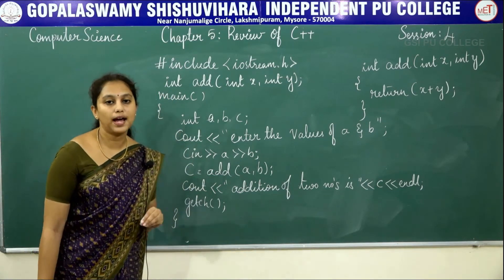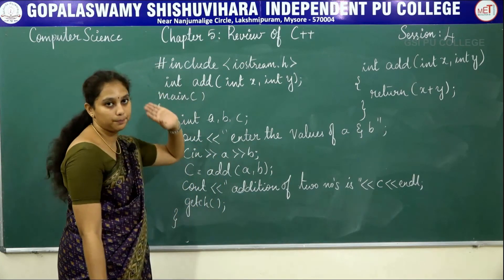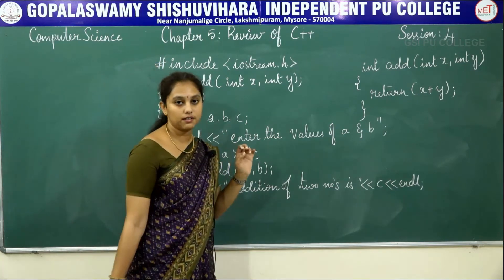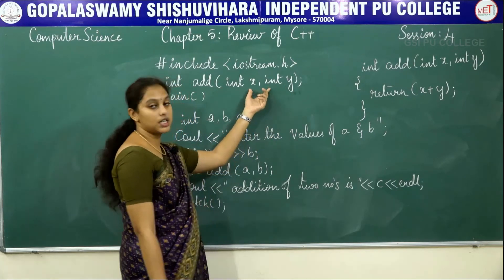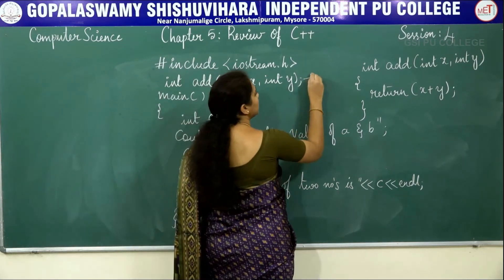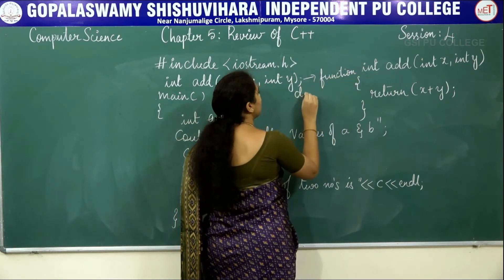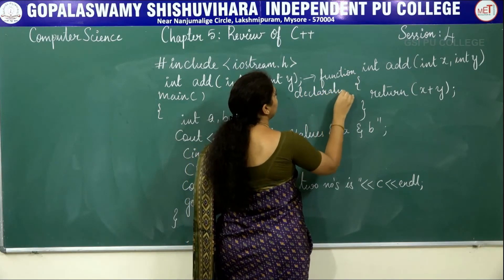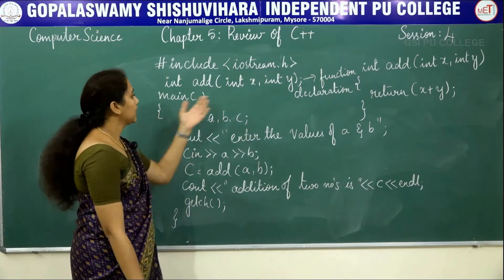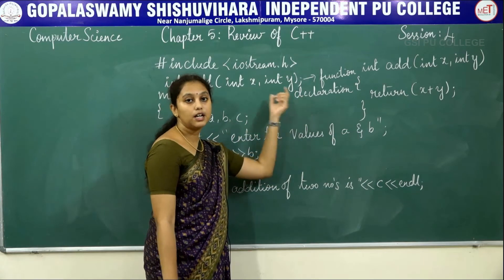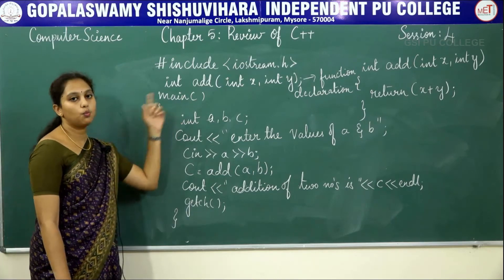This program is to add two numbers using a function. The first section is the preprocessor directive section. Next is 'int add(int x, int y)' — this is called a function declaration. Just like we declare variables before using them, we are declaring the function here in the global declaration section. Next is void main.